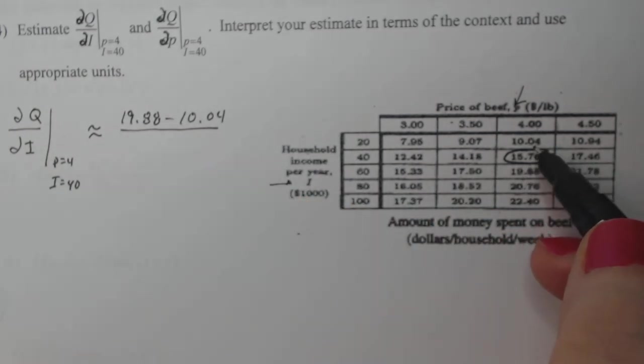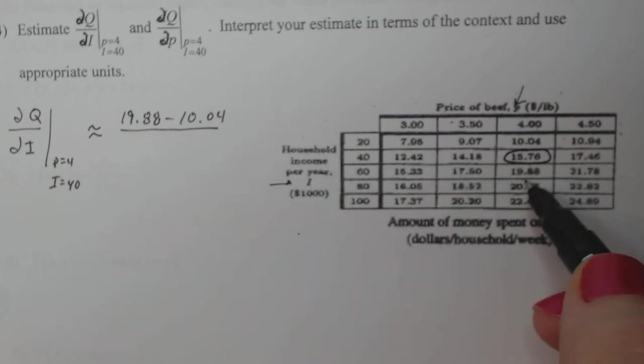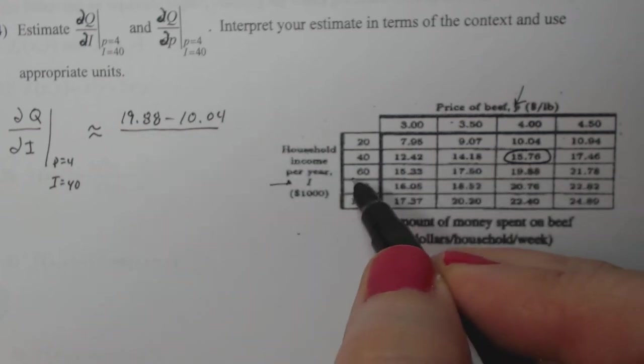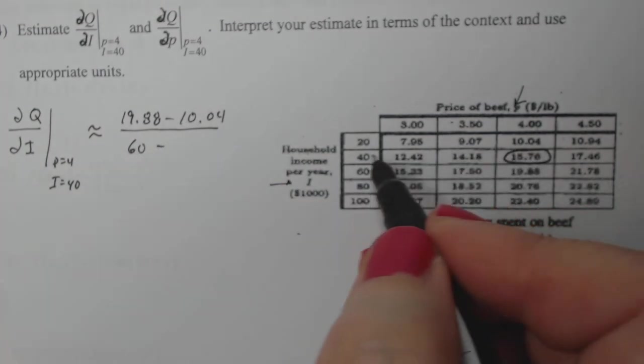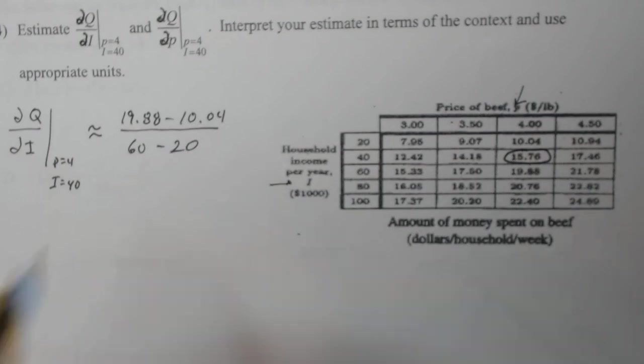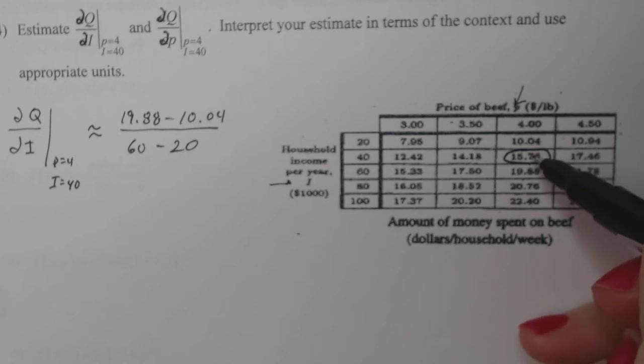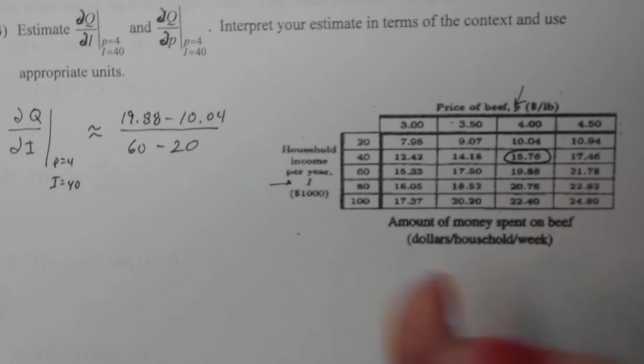So 19.88 minus 10.04, that's called the central difference quotient. It puts the number in question, the reference number, in the center of the two numbers that you have here. Now it's not literally the mean, but on the chart, it's the number that's in the middle of the two, and I use the two when I estimate my derivative. Now, if that's changing, 19.88 compares with $60,000 income and 10.04 compares with $20,000 income. So that's going to be a pretty reasonable estimate.